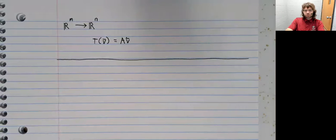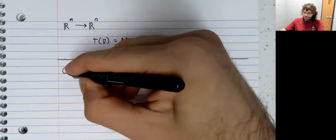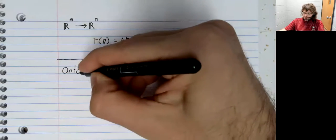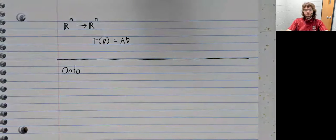One to one and onto are unrelated concepts. So we'll take them one at a time.